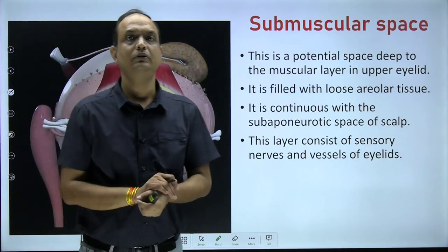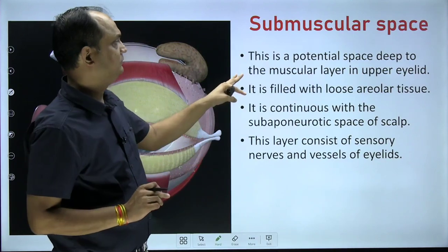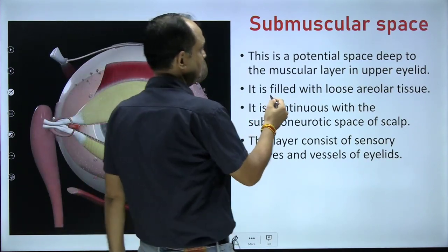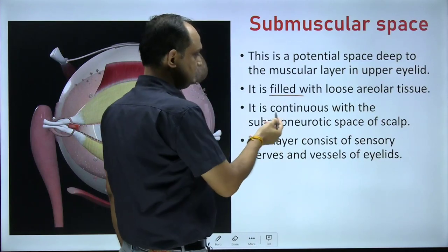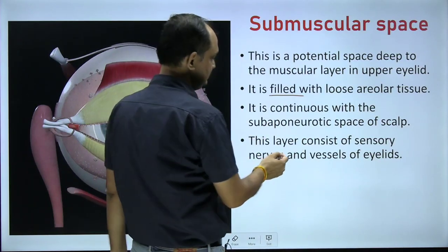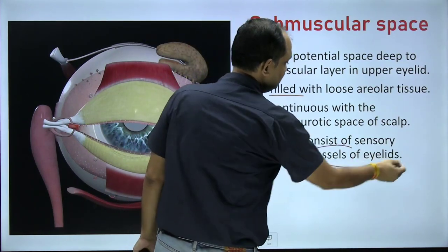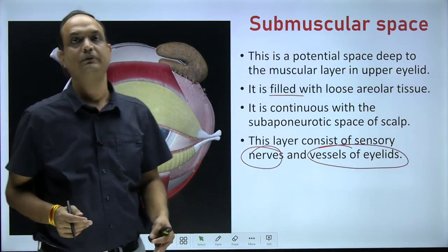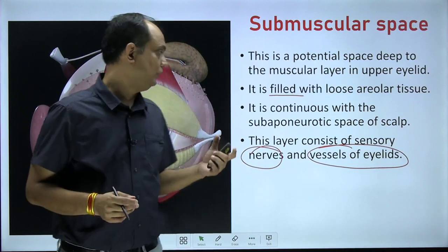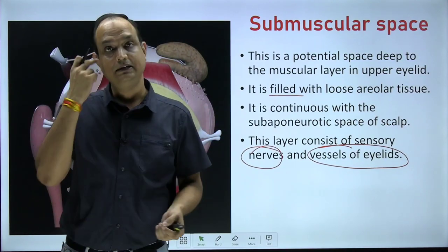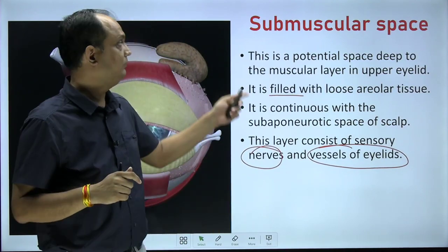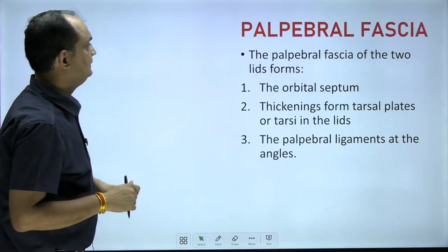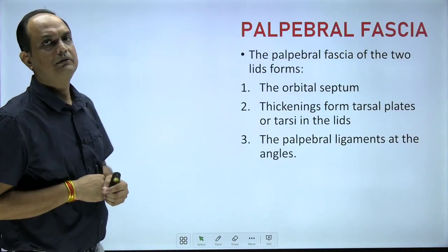The submuscular layer is a small potential space filled with loose areolar tissue. It mainly contains the sensory nerves and vessels of the eyelid. This layer has clinical importance: when administering anesthetic agents to the upper eyelid, the needle must be placed in this space, as it contains the nerves.